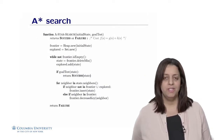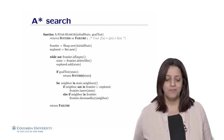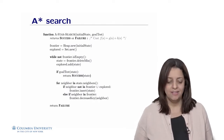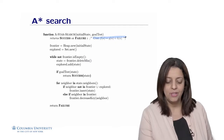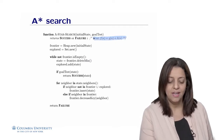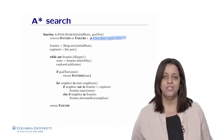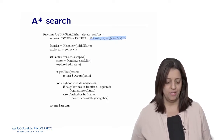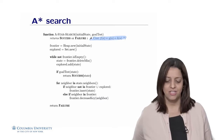The A* algorithm is very similar to uniform cost search and greedy search, except for one detail: we are now using a cost that combines g(n) and h(n). Otherwise, everything else remains unchanged.